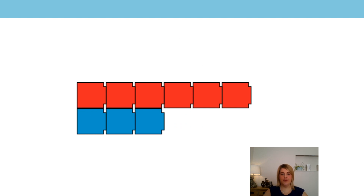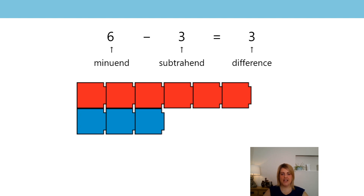Can you have a go now at writing the equation to match this picture? We've got six red cubes and three blue cubes. What's the difference? Have a go at drawing that on your piece of paper and write the equation. There are six red cubes and three blue cubes, so the difference is three. There are three fewer blue cubes than there are red cubes. There are three more red cubes than there are blue cubes. Well done.